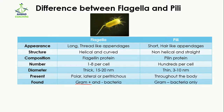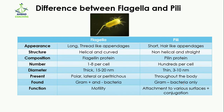Flagella can be found on both gram-positive and gram-negative bacteria, while pili are present only on gram-negative bacteria — they are absent in gram-positive bacteria.